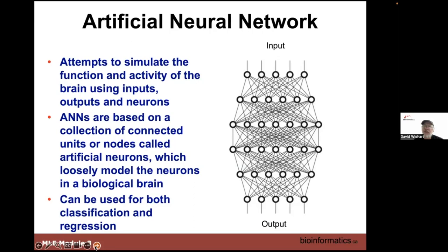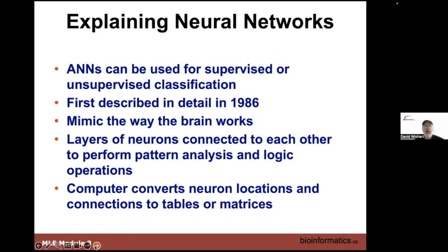We gave an example where you could use machine learning to figure out that distance fallen equals one half at squared, where a is the acceleration of gravity and t is how long it falls. If you had those data points, you could use machine learning to figure out gravitational acceleration — 9.81 meters per second per second. You can do neural nets for supervised learning, and also for unsupervised classification, though the vast majority is for supervised.